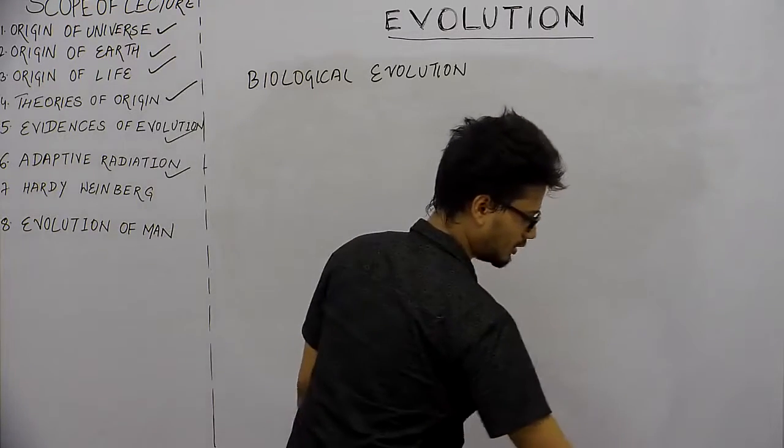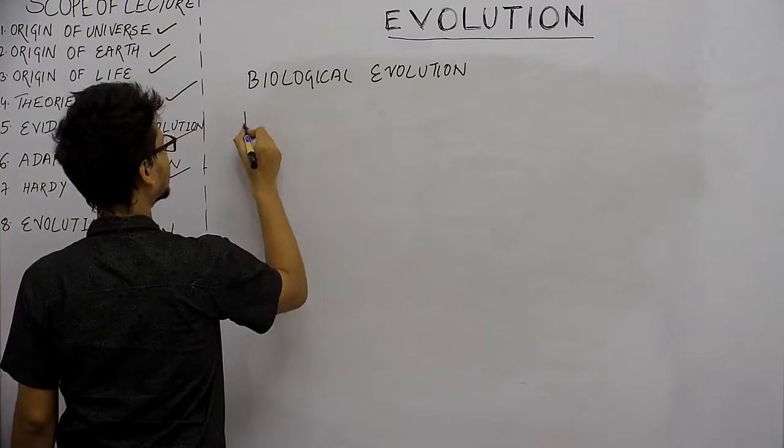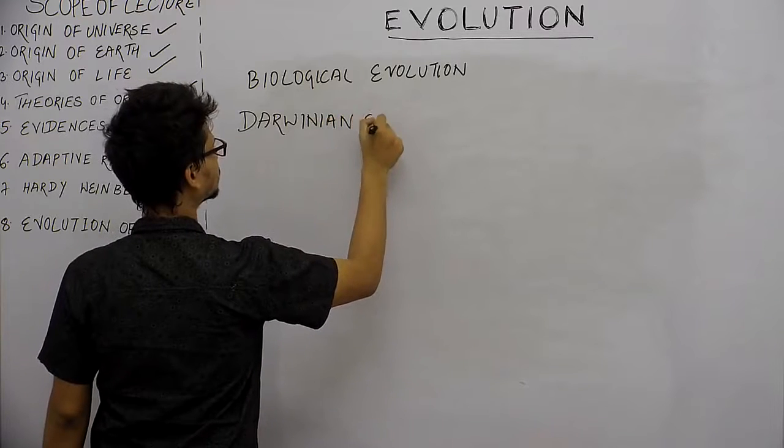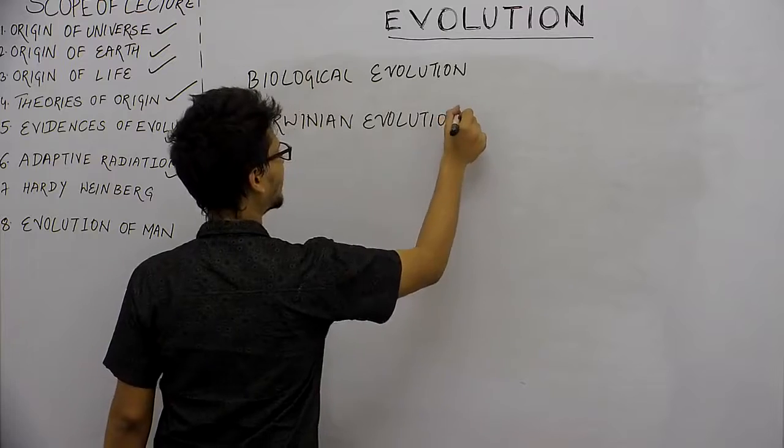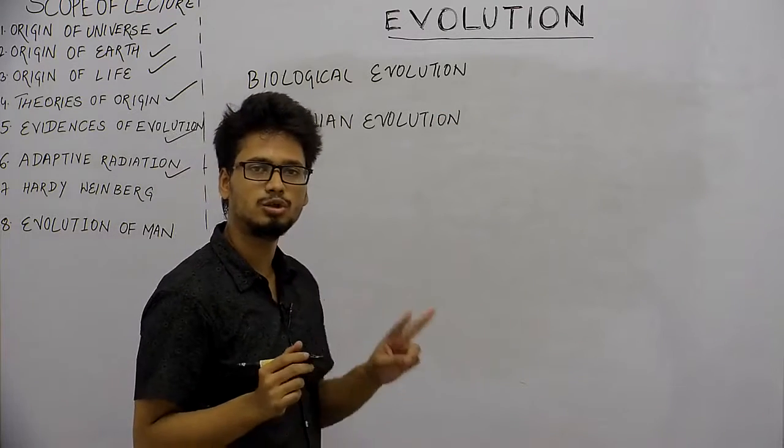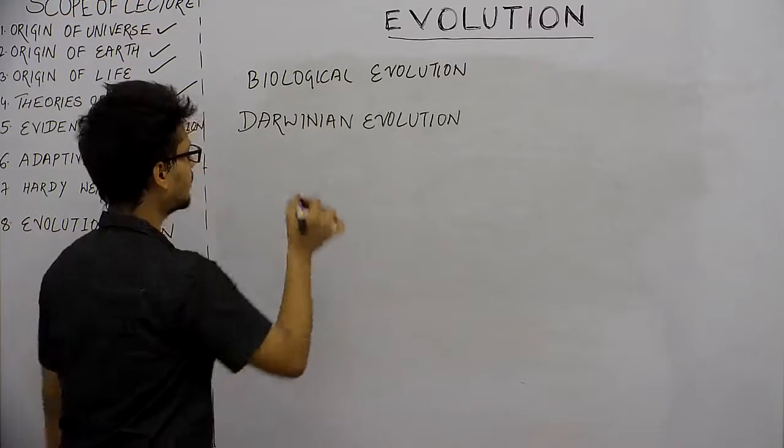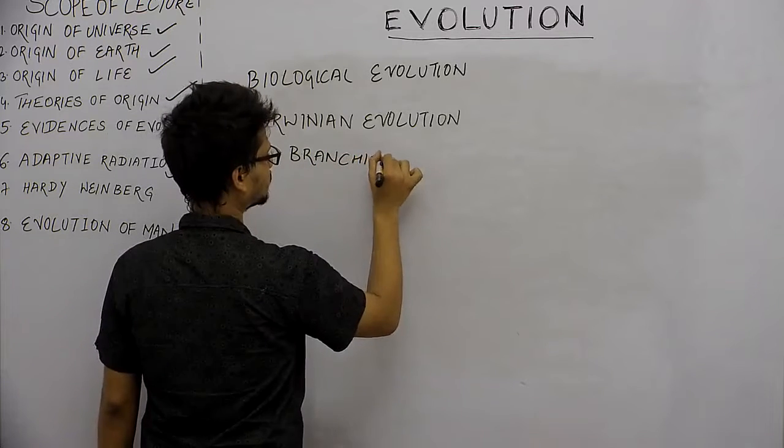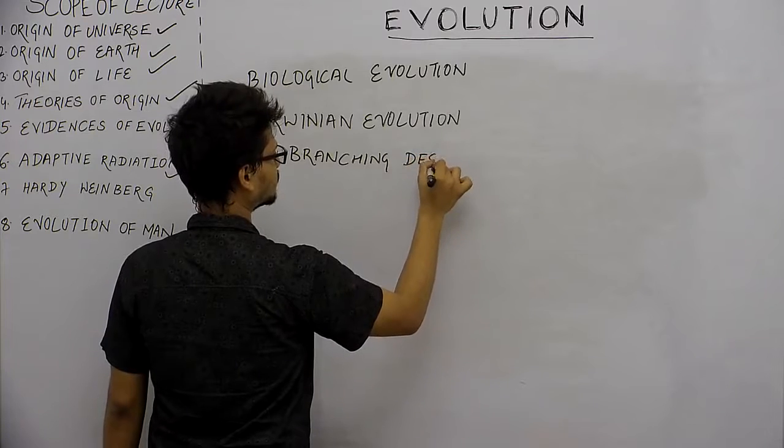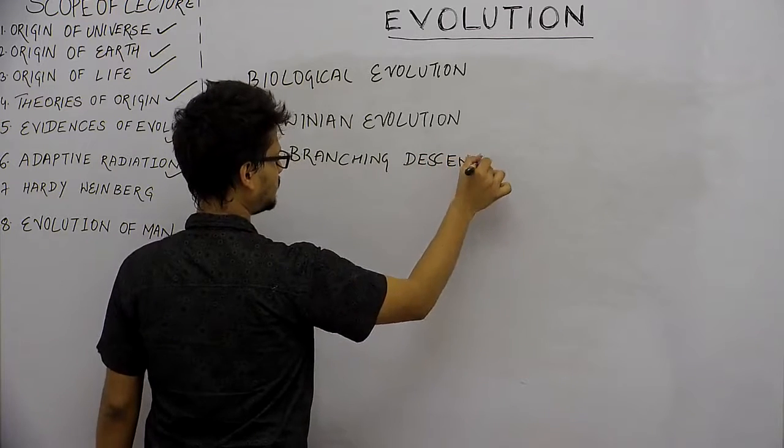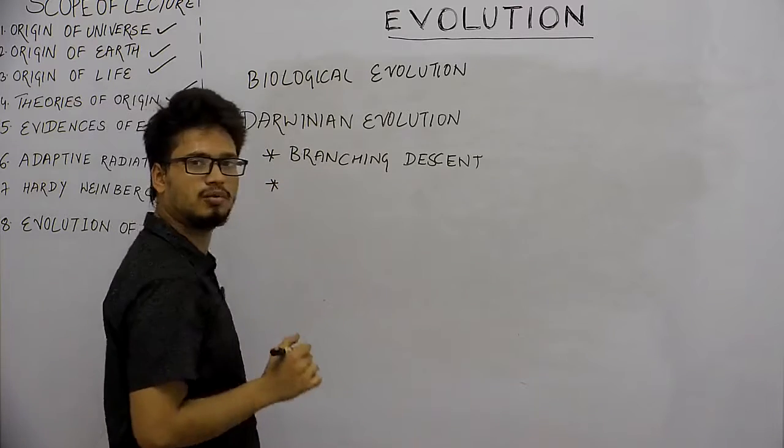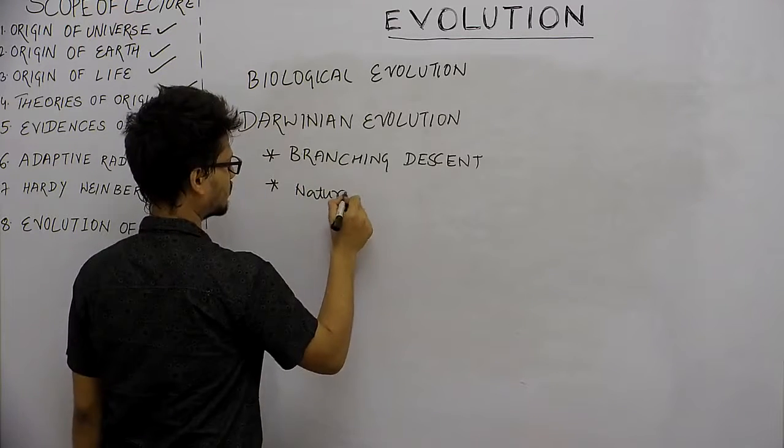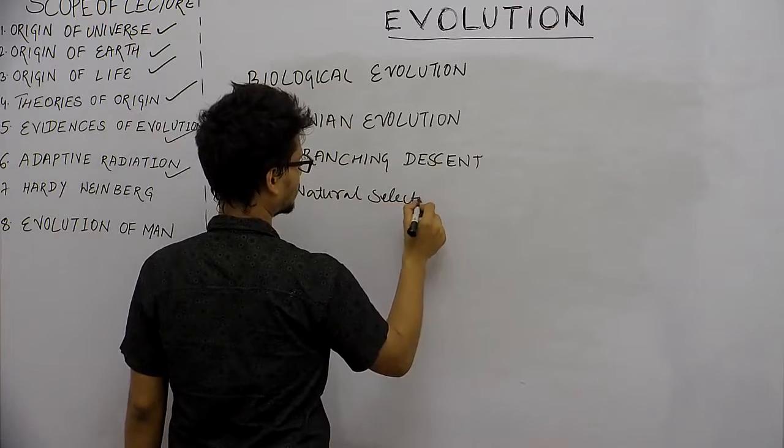Now talking about Darwin. Darwinian evolution had two very important points: the first one was branching descent, the other point was natural selection.